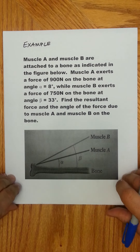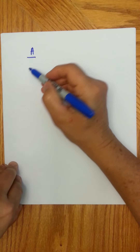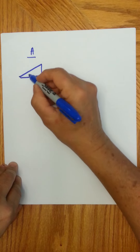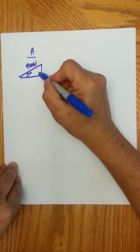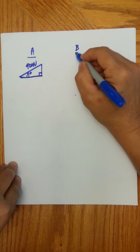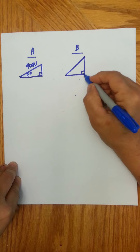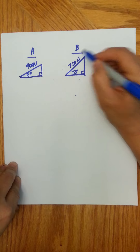Essentially what we want to do is we have two right triangles here. From muscle A, we have an 8-degree triangle, 8 degrees here with the horizontal, and a force of 900 newtons. This is understood to be a right triangle where the bone is on the horizontal. Then we have muscle B acting at 33 degrees to the horizontal — here's your right triangle — with 750 newtons as your force.